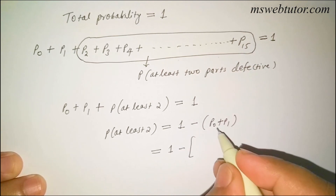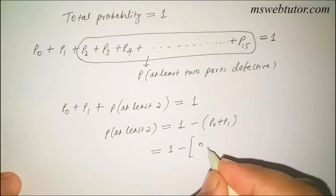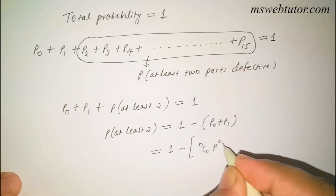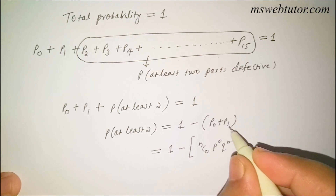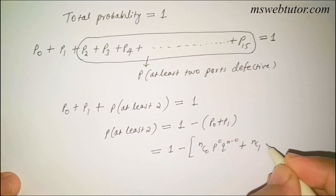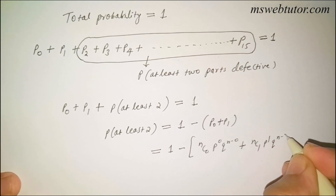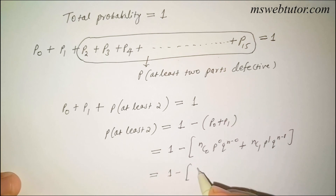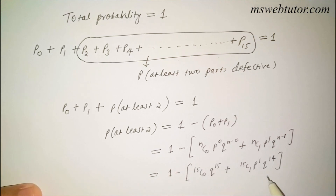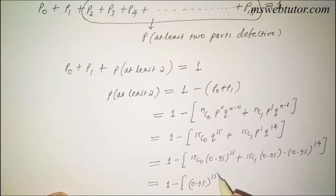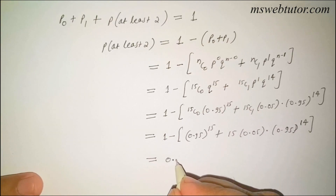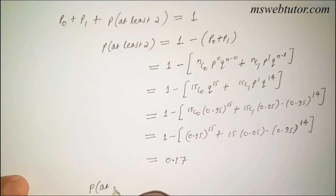To find P(0), substitute r = 0 in the binomial formula: 15C0 × p^0 × q^15 = 1 × 0.95^15. To find P(1), substitute r = 1: 15C1 × p^1 × q^14 = 15 × 0.05 × 0.95^14. Substituting n = 15 and the values of p and q, the result becomes 1 − [0.95^15 + 15 × 0.05 × 0.95^14], which gives approximately 0.17.